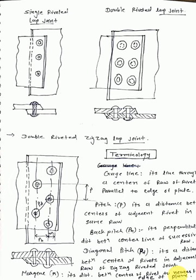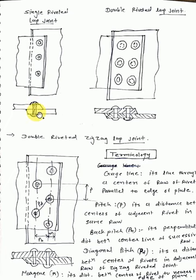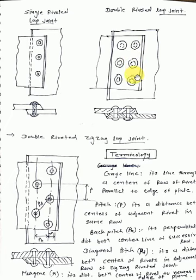For the single riveted lap joint, we have two plates shown in front view and top view. This is the first plate and this is the second plate. First, we need to drill the holes — here we will have the rivets in a single row. For the double riveted type, we have chain type and zigzag type.